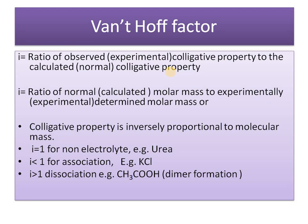The Van't Hoff factor i equals observed or experimental colligative property divided by normal or calculated colligative property. Since colligative property is inversely proportional to molecular mass, the formula reverses for molecular mass. i = 1 for non-electrolytes like urea, glucose, polymers, DNA, RNA, sucrose. i is greater than 1 for dissociation — example KCl. i is less than 1 for association — example acetic acid. Please keep this in mind.